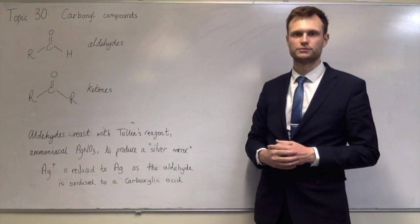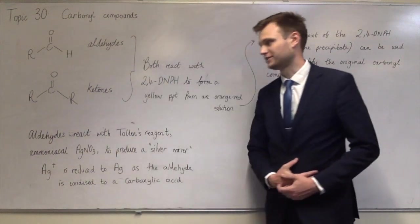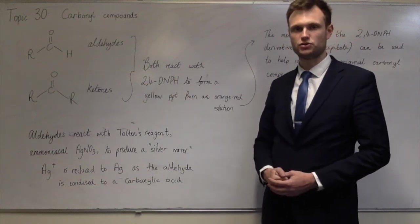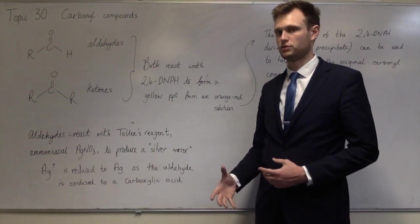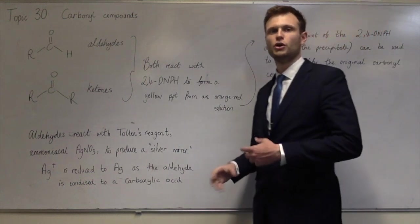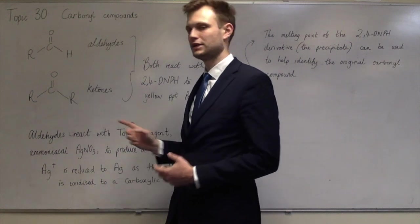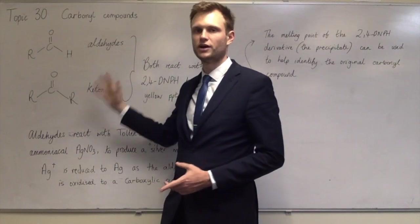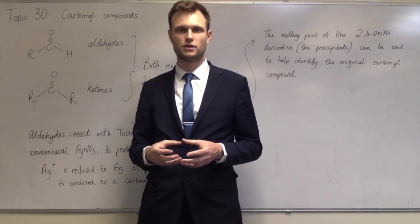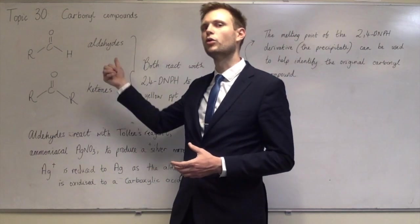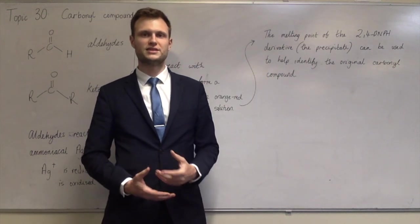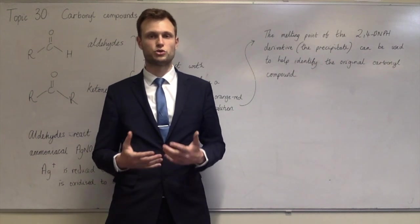So it can be used to determine not just that you've got an aldehyde or ketone, but which aldehyde or ketone it is. If you want to know if you've got an aldehyde or ketone, you react with 2,4-DNPH. It will react with both, producing a yellow or orange-yellow precipitate. If you find the melting point of it, it will give you an indication as to which aldehyde or ketone you had to begin with. Just knowing that the melting point is indicative of which aldehyde and ketone you had is pretty much all you need to know.